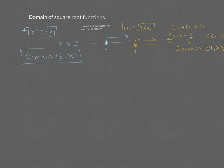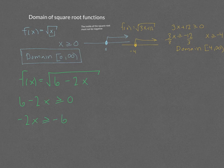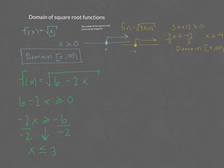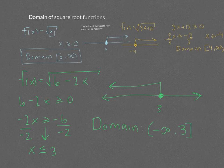One more domain problem where something unusual happens: for the square root of 6 minus 2x, we need 6 minus 2x to be greater than or equal to zero. Subtracting 6 gives negative 2x is greater than or equal to negative 6. Dividing both sides by negative 2 requires flipping the inequality sign, giving x is less than or equal to 3. The domain is negative infinity to 3, with a bracket at 3 since we can be equal to 3.